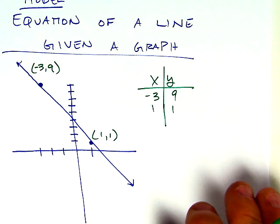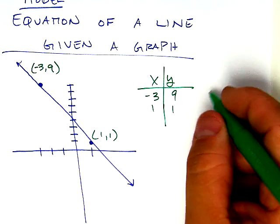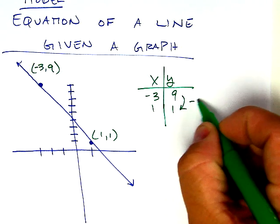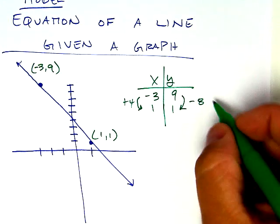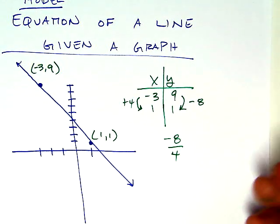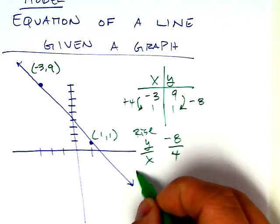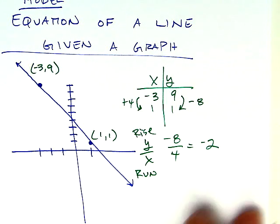And the first thing that we need to find is the rate of change, or what I call the change factor, or what some books call the slope. So how does 9 become a 1? Well, you subtract 8. And how does negative 3 become a 1? You add 4. Stack those two values over each other, and always remember to do Y over X. Books and everybody else calls that rise over run. Just always remember that. And then always reduce your fractions.